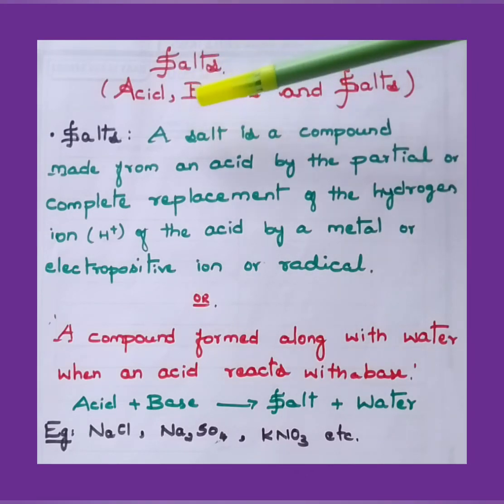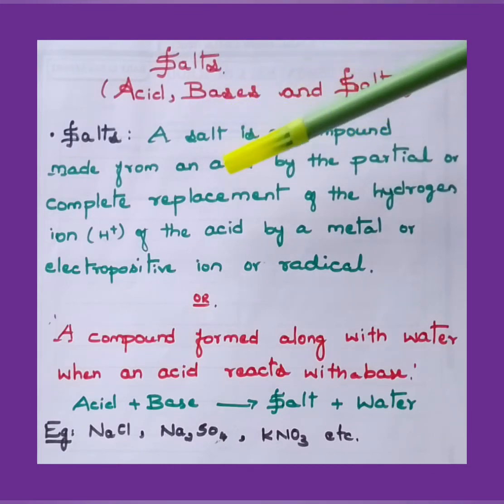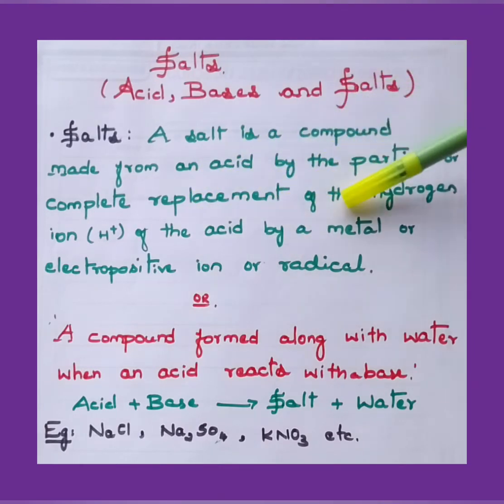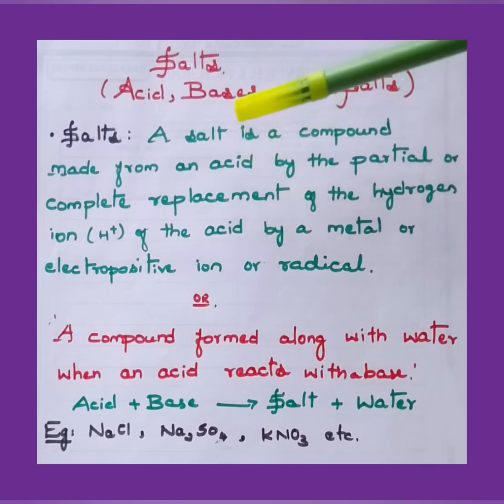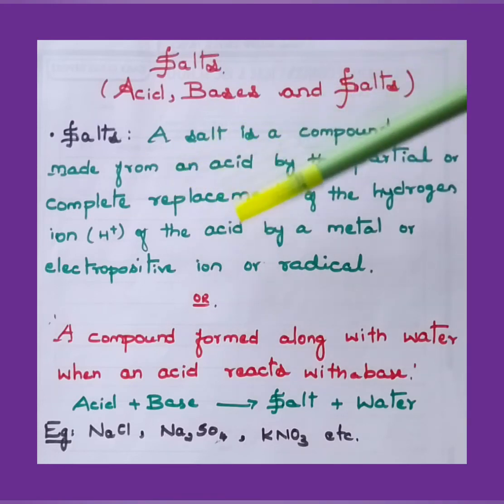As we look into the definition for salt, a salt is a compound made from an acid by a partial or complete replacement of hydrogen ions H+ of the acid by a metal or electropositive ion or radical. About this, we have already solved enough equations based on acids and bases and how salts are obtained. Or you can also define salt as a compound formed along with water when acid reacts with a base.